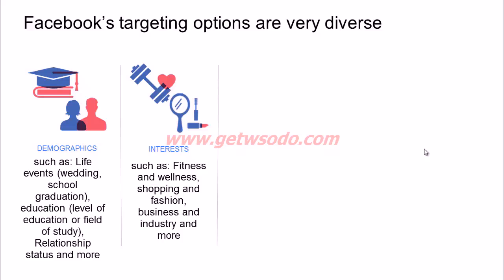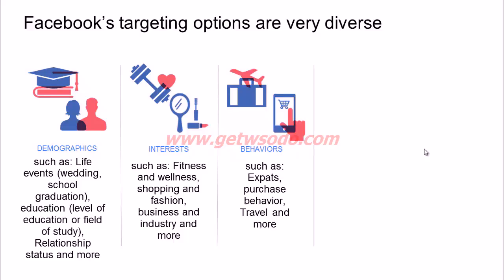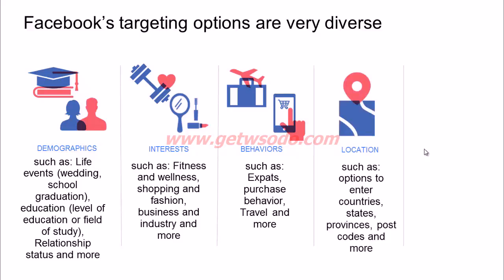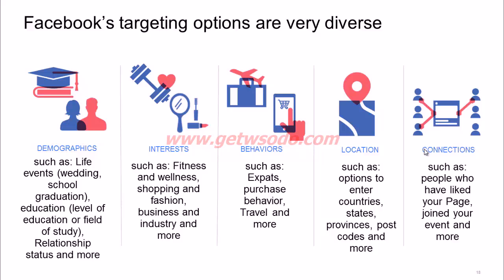You can target people based on interests — fitness and wellness, fashion, shopping, beauty products, and more. You can target based on behaviors such as expat status, purchase behavior, affinity for high-value or mid-to-high-value products, and travel behavior — whether they travel frequently or internationally. You can also target by location: cities, states, countries, or by marking a spot on a map to target people around it.